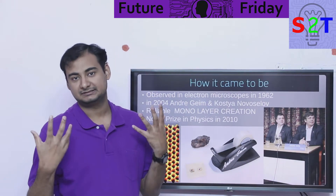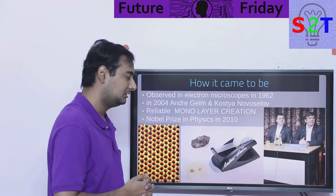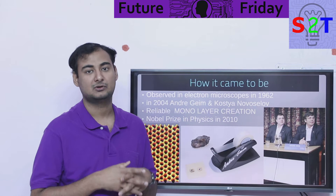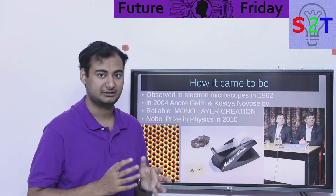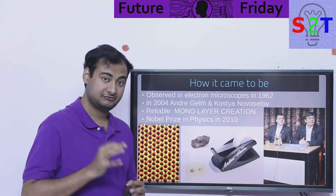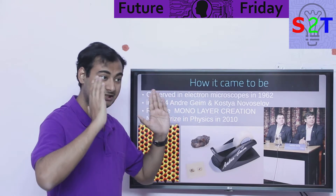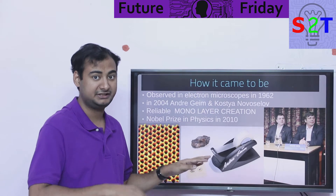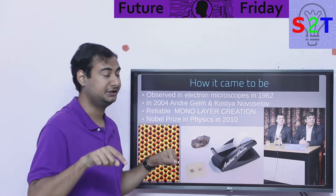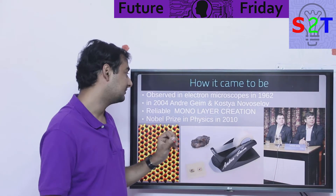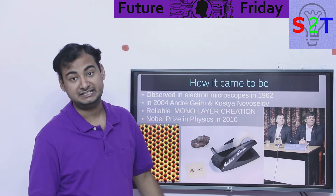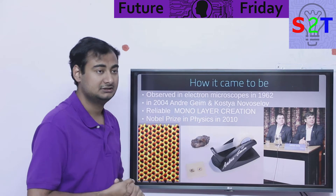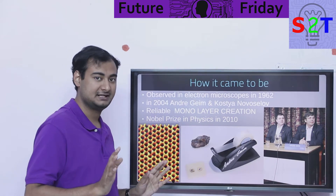So how did the graphene craze start? The science and technology was already there — people were always thinking about it and figuring out how it works. The first time it was undeniably observed was under an electron microscope in 1962, so people have been studying it for a long time, and even before that it was theorized and hypothesized.